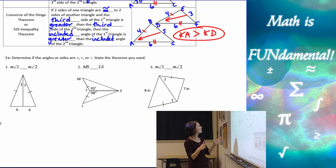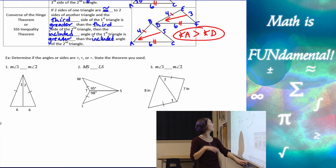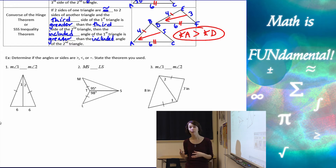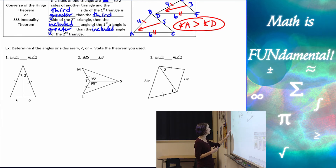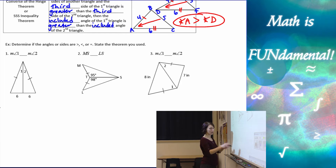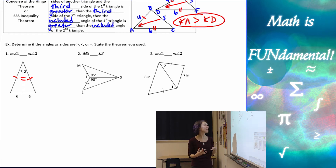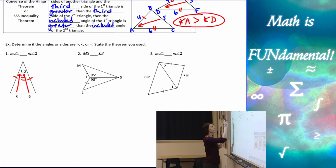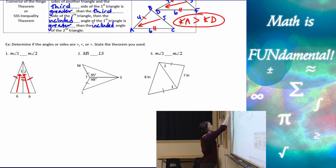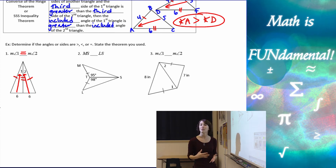Let's look at our examples. We have to determine if angles or sides are less than, greater than, or equal to, and state the theorem used. In the first one, we're given one pair of congruent sides, and using the reflexive property of congruence, the shared middle side is also congruent. Since those third sides are also given as congruent, the angles across from those sides must equal each other — so angle one equals angle two.